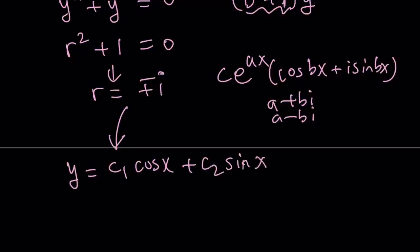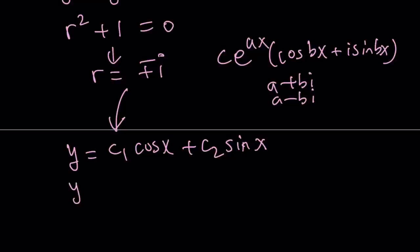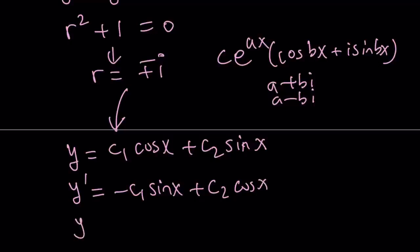We still have to plug this into the original equation because we were given a specific constraint, so c1 and c2 need to be determined as much as possible. Let's differentiate y equals c1 cosine x plus c2 sine x once: y prime equals negative c1 sine x plus c2 cosine x. We don't really need to differentiate twice because we know we'll get the opposite.